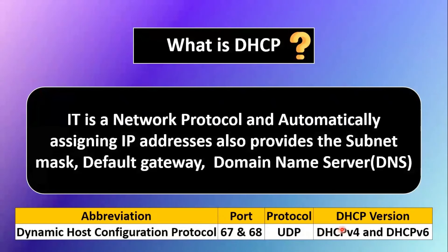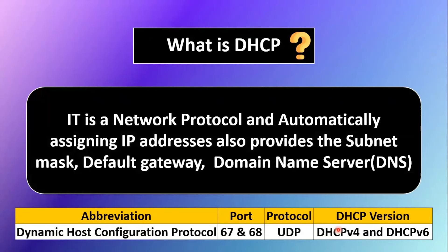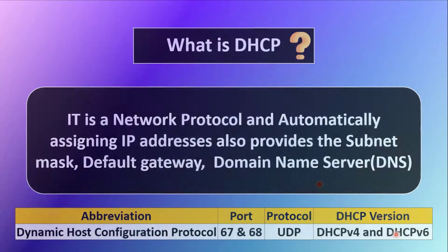DHCP is a UDP protocol. The reason it uses UDP is that UDP supports multicast. We also have two versions of DHCP: DHCPv4 and DHCPv6. Version 4 supports IPv4 addresses and version 6 supports IPv6 addresses.